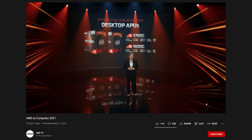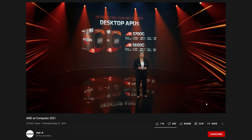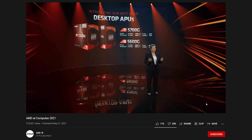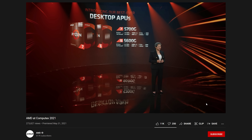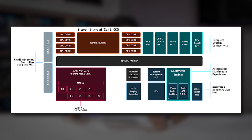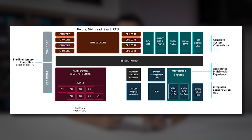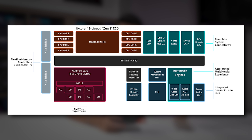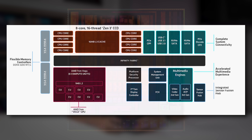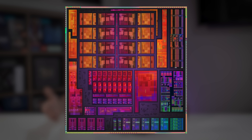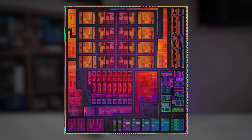We'd expect performance to scale roughly in line with compute unit count, so not a huge disparity in graphical horsepower, though the 5700G would have a distinct advantage in multi-threaded applications like video editing, streaming, and encoding. Also bear in mind these chips rely on Zen 3 architecture for their CPU cores, which means you'll enjoy a healthy latency reduction over previous APU generations, thanks to unified L3 cache and an 8-core-per-CCX design, meaning core-to-core communication need not travel across the Infinity Fabric first. This ultimately translates to more efficient processing and higher frame rates in games.